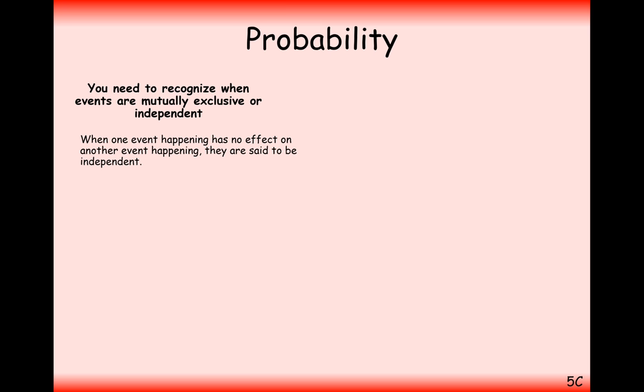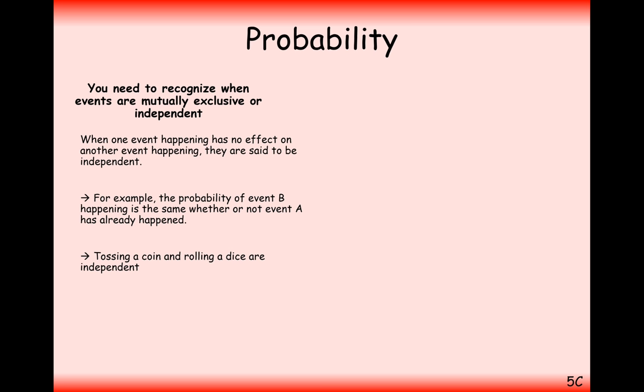Let's look at the definition of independent events. For example, tossing a coin and rolling a dice at separate times are two independent events. These are completely separate — if you get a head, that doesn't affect the next roll of your dice. They are two probabilities that don't affect each other in any way, shape, or form. They are completely independent.